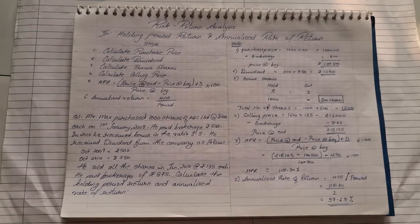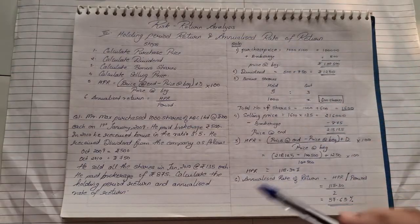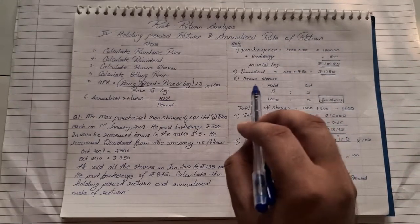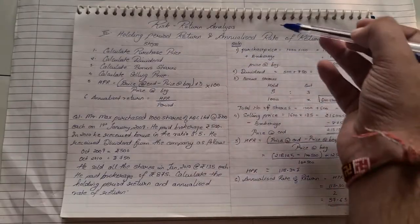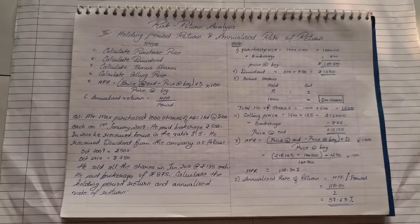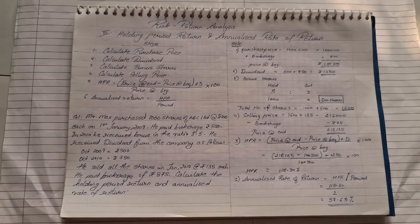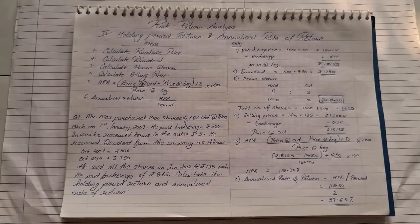So with that, the sum based on holding period return and annualized rate of return comes to an end. These are the steps that you have to follow. Very simple sum. Now, it's not necessary that in the sum, they might have bonus. If it's not there, ignore the bonus part. This is a full-fledged sum. Whatever is not there, you can ignore that particular step. So that was the third part in the chapter Risk and Return Analysis. I hope everyone has understood how to calculate the holding period return and how to calculate the annualized rate of return. With that, we will be ending the video here. Thank you very much.